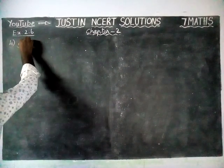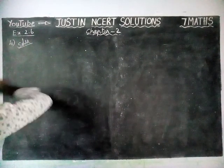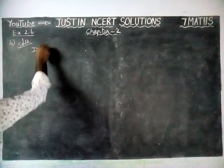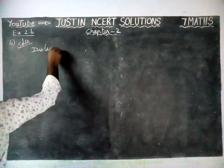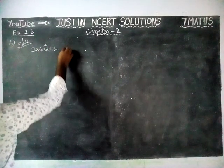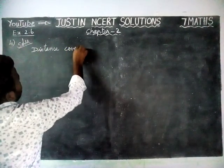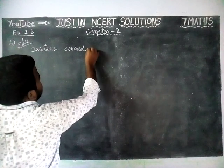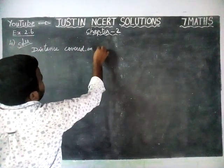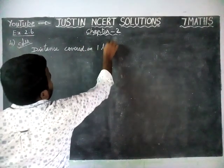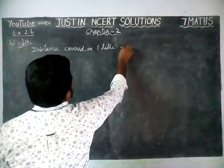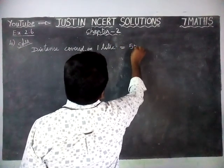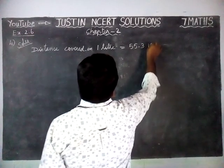So first we will write the given information. Distance covered in 1 litre is equal to 55.3 km.